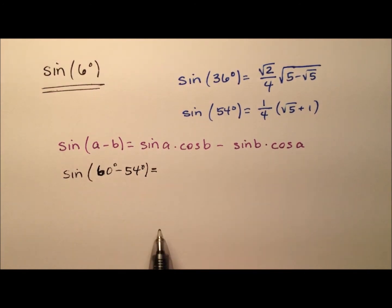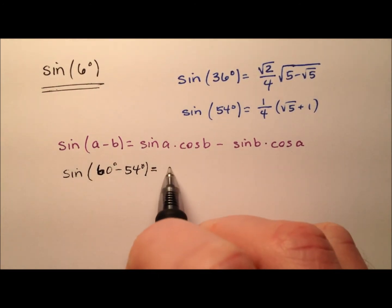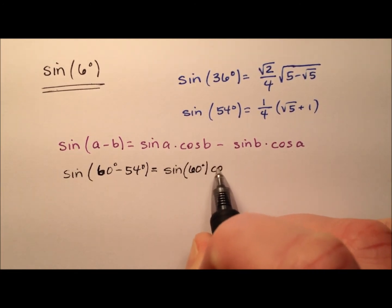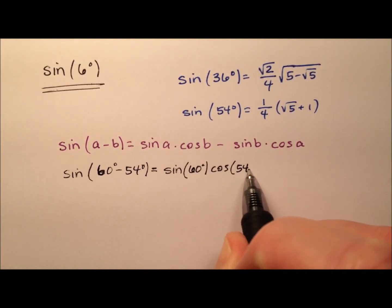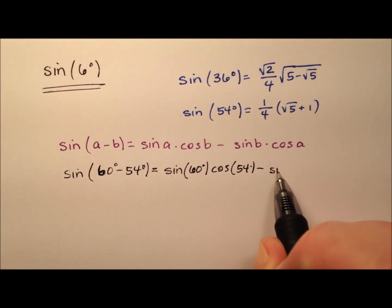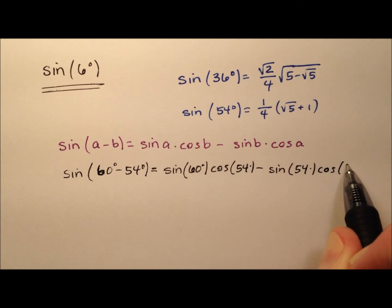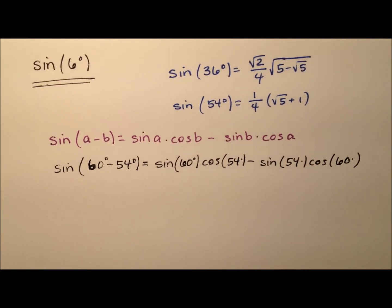So when I put this into the formula, it ends up being the sine of 60 degrees times the cosine of 54 degrees minus the sine of 54 degrees times the cosine of 60 degrees.